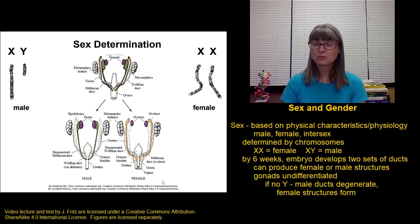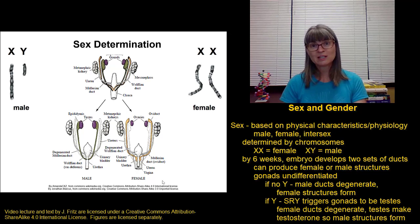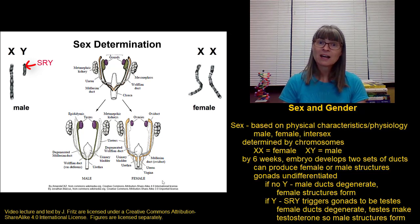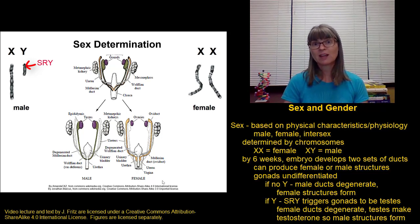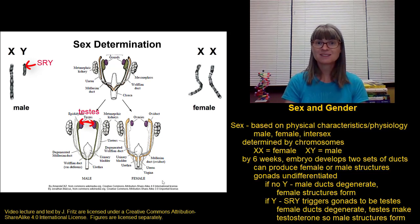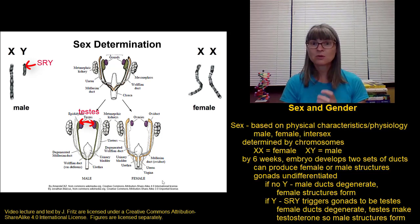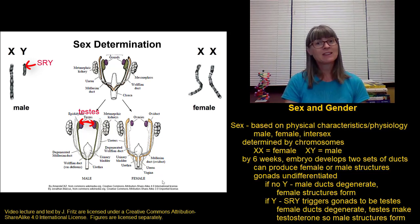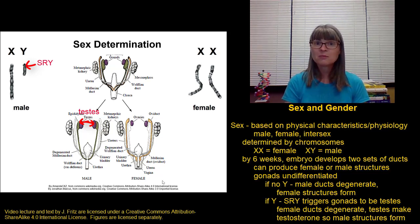However, if a Y chromosome is present, something different happens. There's an important gene on the Y chromosome called the SRY gene that controls a lot of other genes. When the SRY gene is transcribed and we make that protein, it controls the production of many other proteins in the cells of a male embryo. One of the most important functions of these SRY-controlled genes is to cause the gonads to become testes. Once the gonads become testes, they produce two important things: testosterone, and a hormone that causes the degradation of the ducts that would become the female reproductive structures.